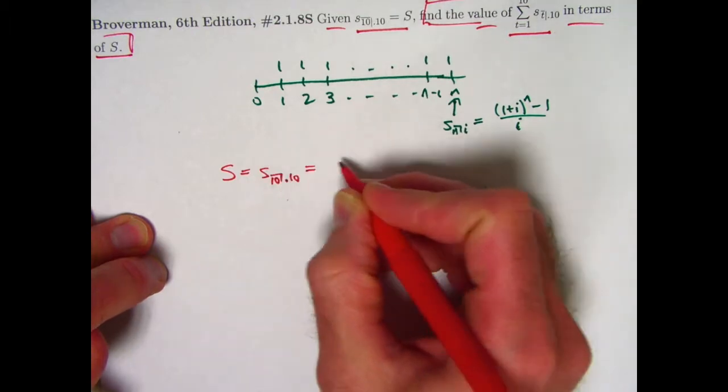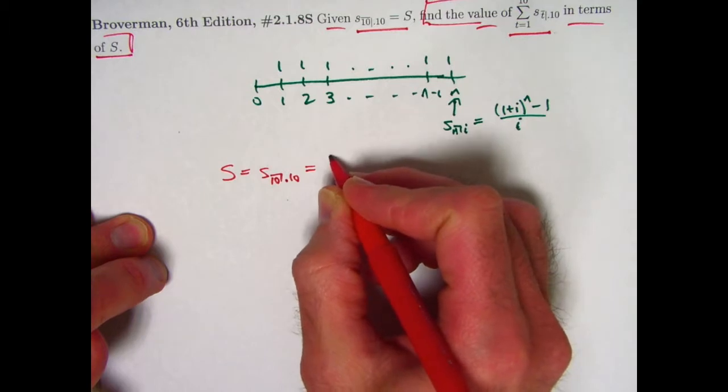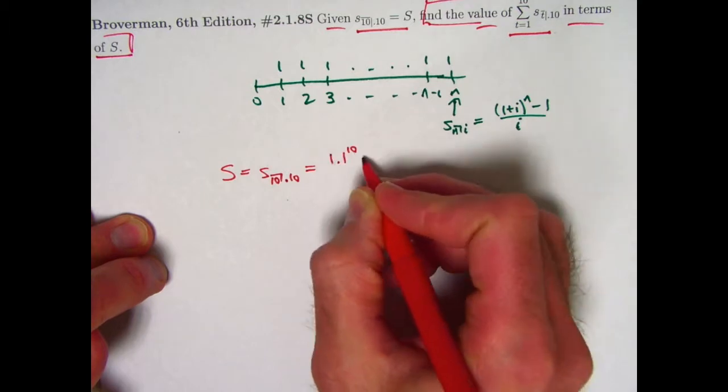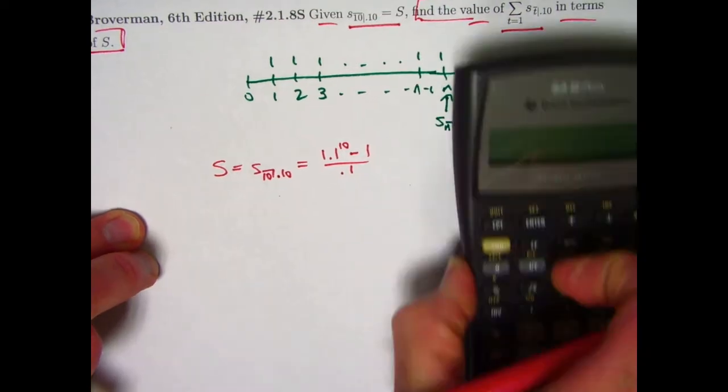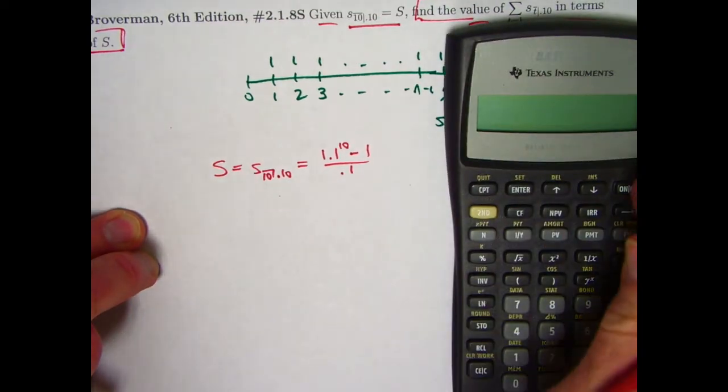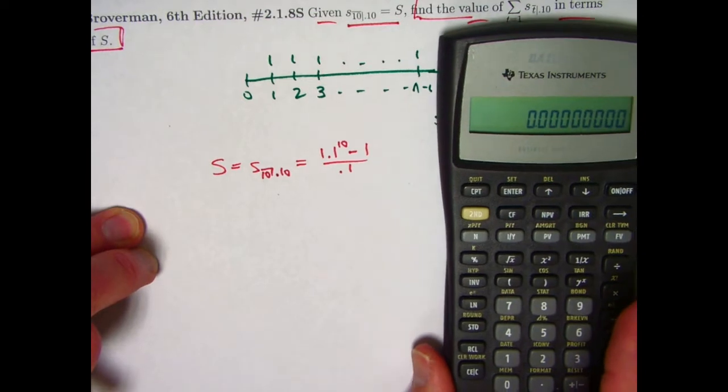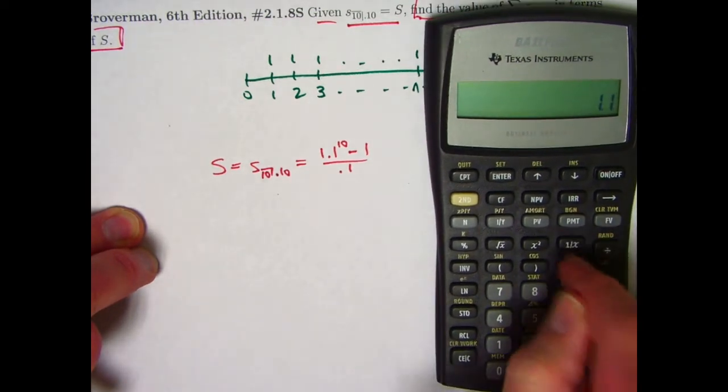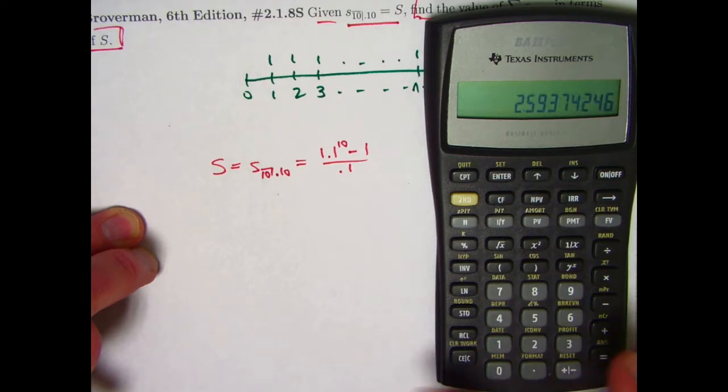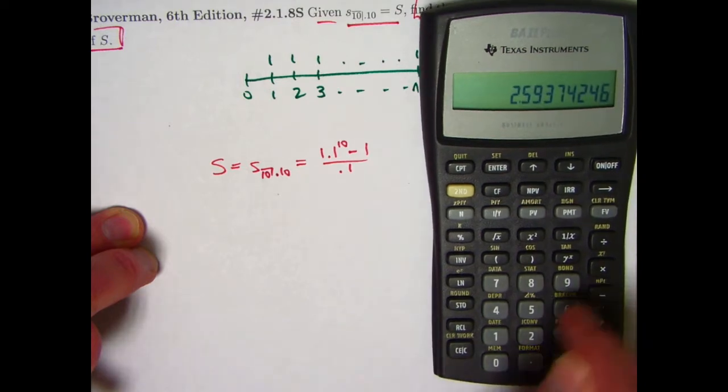When n is 10 and i is 0.1, this is going to become 1.1 to the 10th power minus 1 divided by 0.1. Let's see what that is just for the sake of interest. 1.1 raised to the 10th power is this. Subtract 1, divide by 0.1.